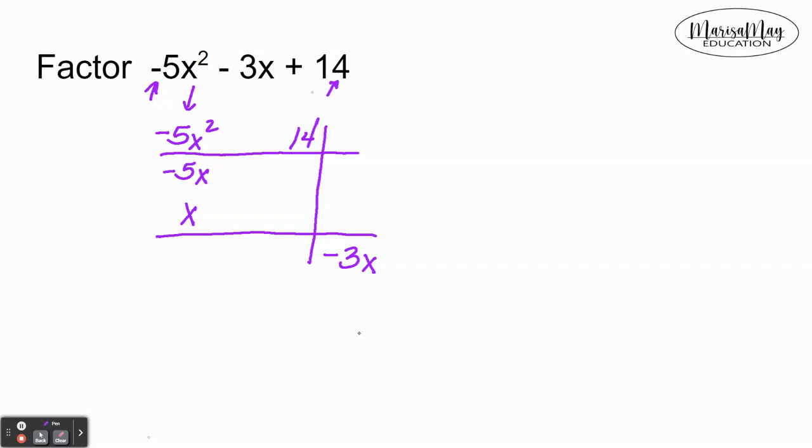Then we look at the second column and ask ourselves okay what times what will multiply to give me 14. So that has to be 7 and 2, right? So I'm gonna put 7 and 2. By the way think about it, you could flip-flop that and put the 2 on top and the 7 on the bottom.